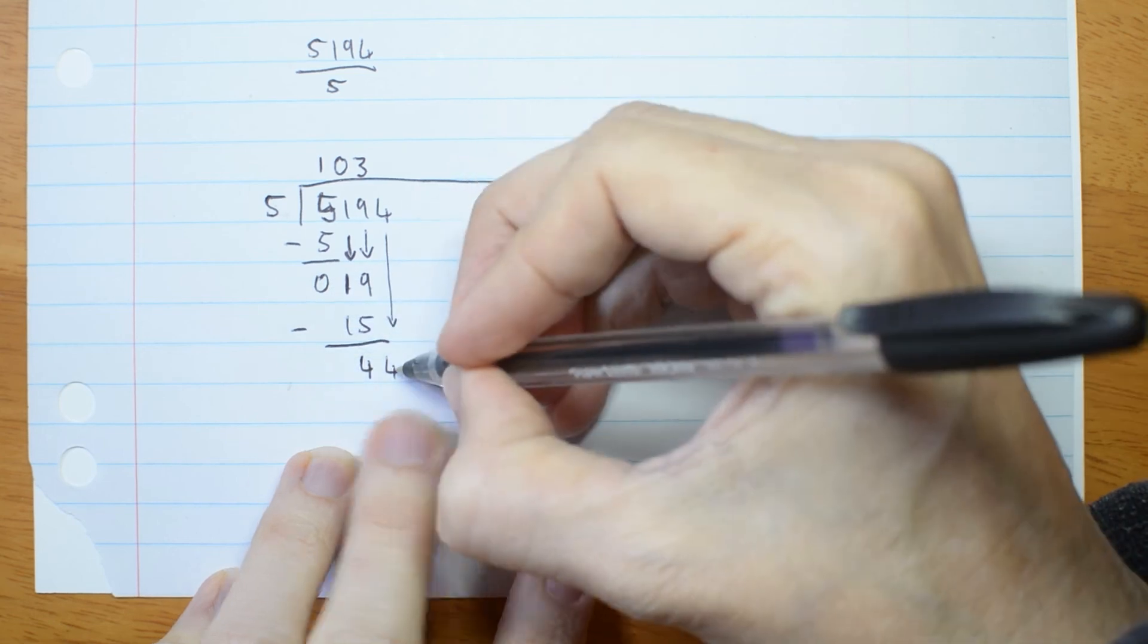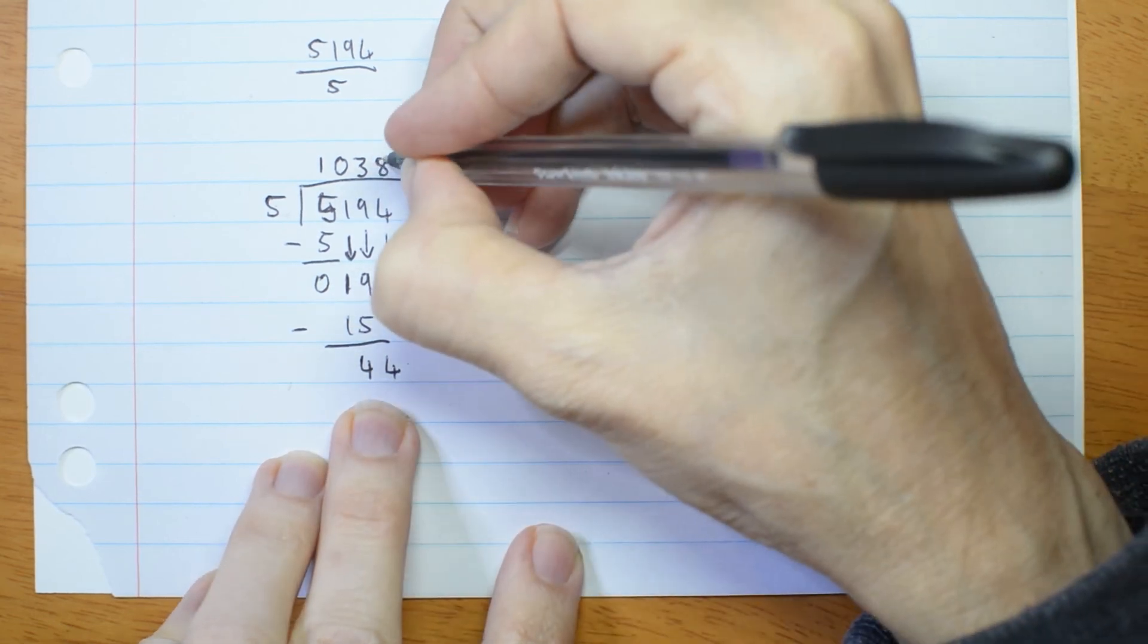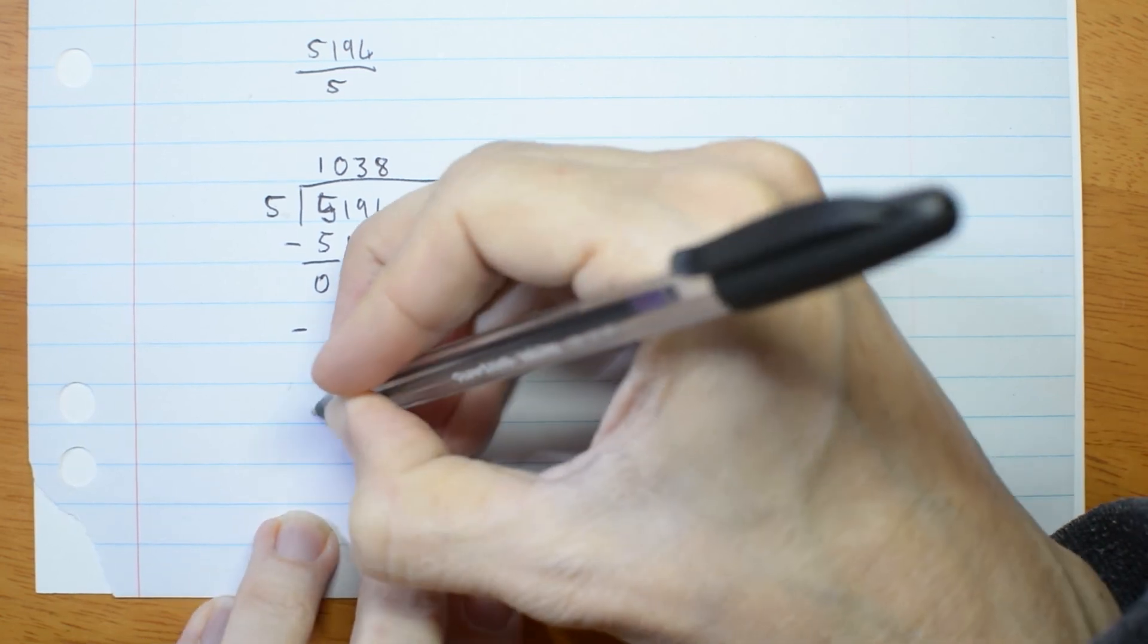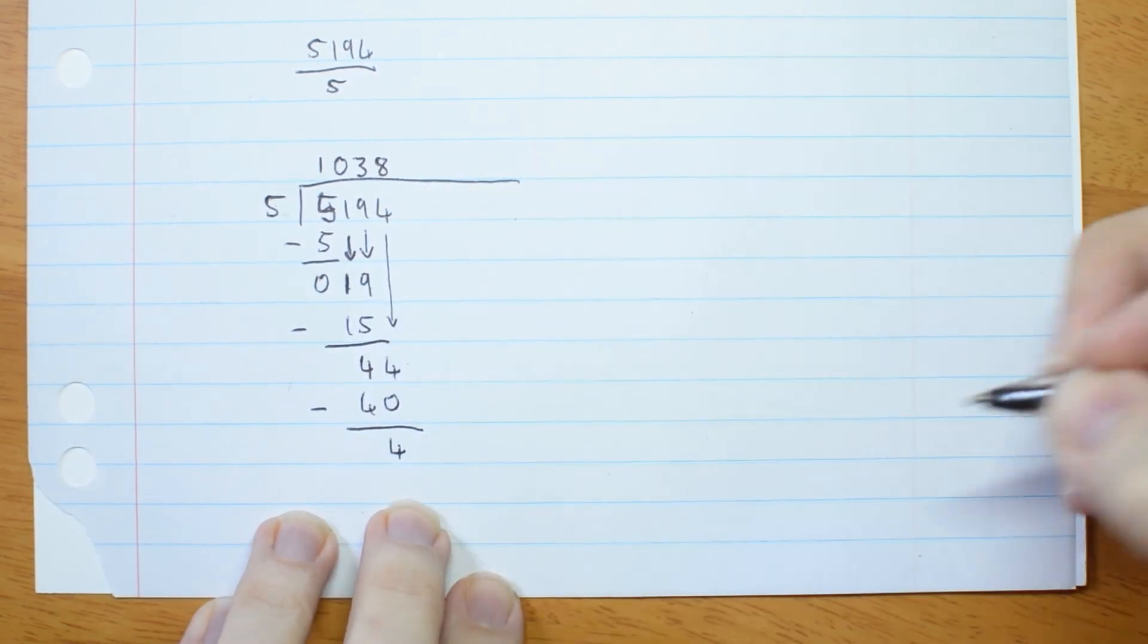5 goes into 44. 8 times. 5 eights are 40. Subtract remainder 4.